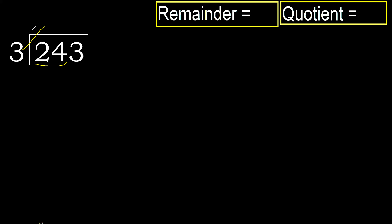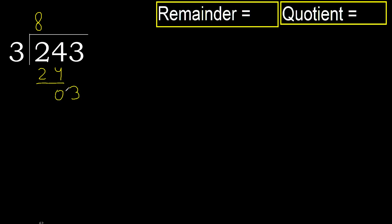3 multiplied by 9 is 27, which is greater. 3 multiplied by 8 is 24, which is not greater. Subtract — remainder is 0. Bring down the next digit, 3. 3 multiplied by 1 is 3, which is not greater. Subtract.